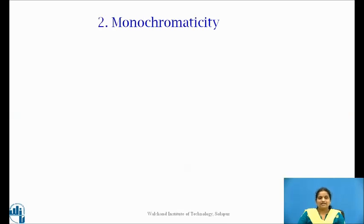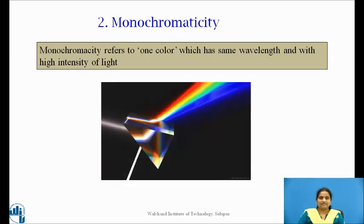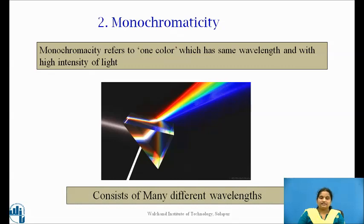Now, let us know what is monochromaticity? This is another important property of laser light. Monochromaticity is the term that refers to one color, which has same wavelength and with high intensity of light. White light is a combination of all colors. It consists of many frequencies and thus corresponding spreadings and scatterings.